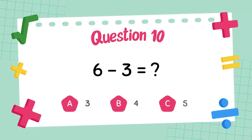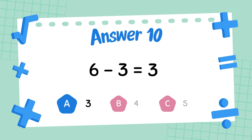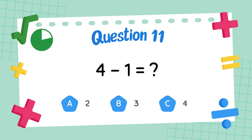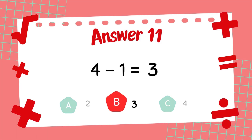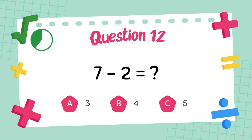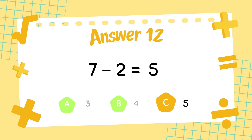What is 6 minus 3? The answer is 3. What is 4 minus 1? The answer is 5. What is 7 minus 2? The answer is 5.